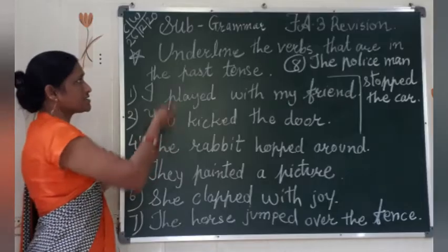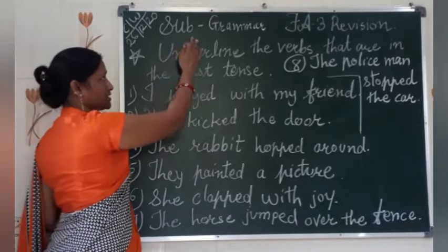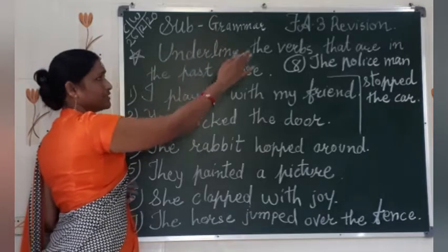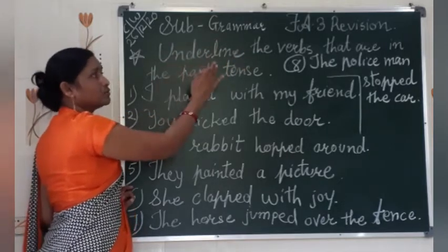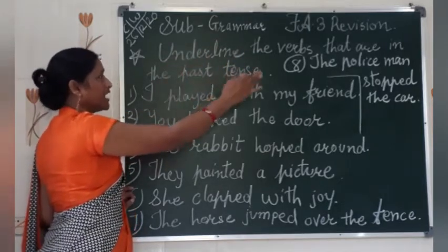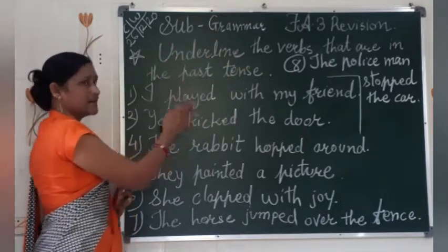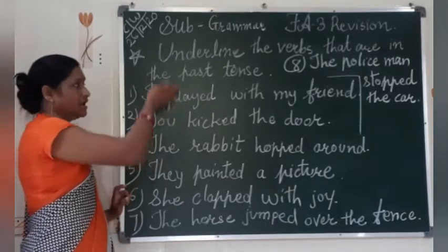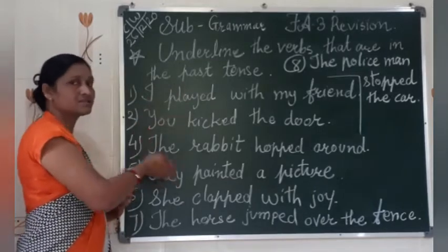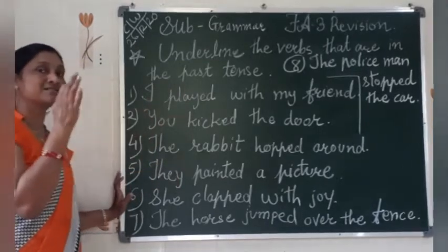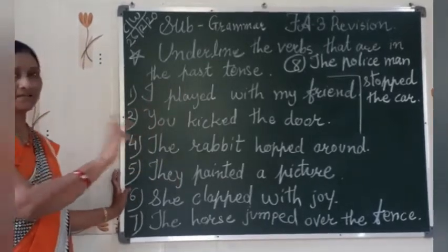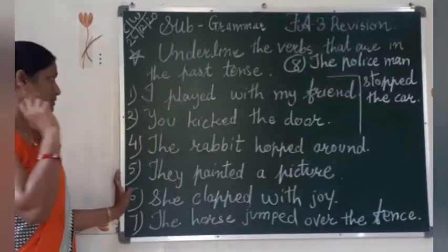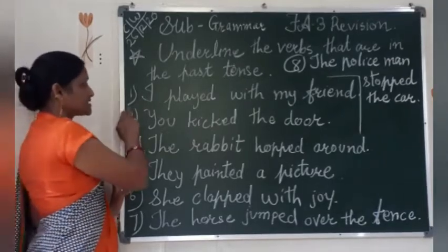Next exercise from the Subject Grammar, FA3 Revision: Underline the verbs that are in the past tense. These sentences are in the past tense — verbs that are underlined. First one: